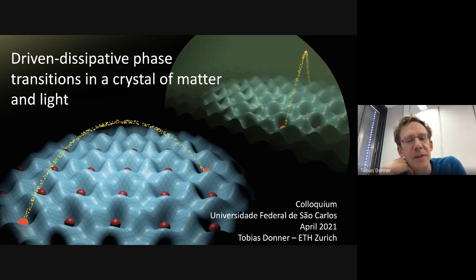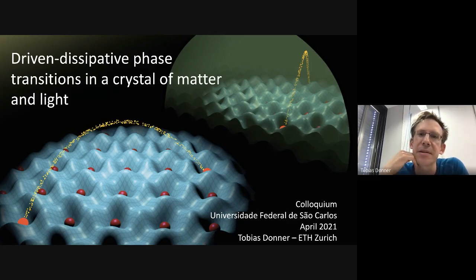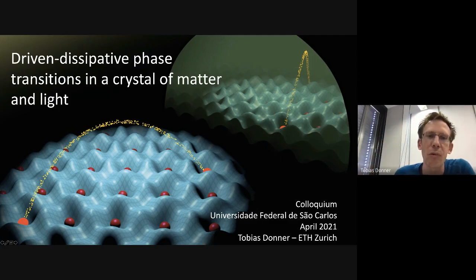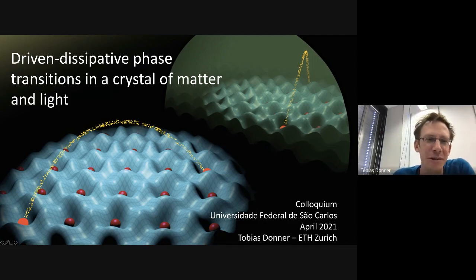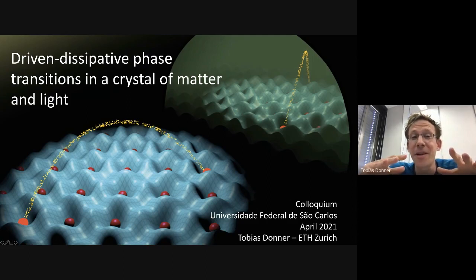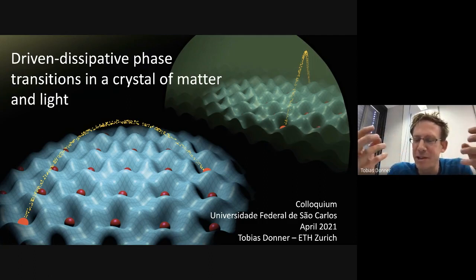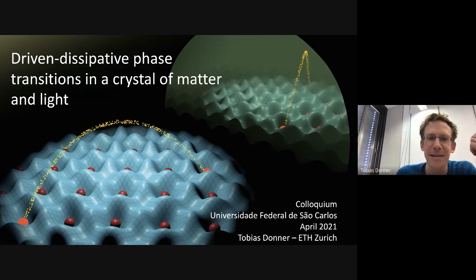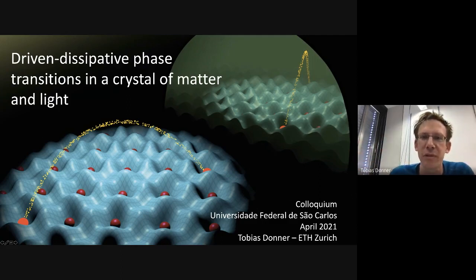I would like to talk about our experiments at ETH Zurich in which we combine a quantum gas or a Bose-Einstein condensate with a high-finesse optical cavity. This combination gives rise to long-range interactions between particles. You see on this first slide our artistic view: atoms as red marbles sitting in a potential that is self-consistently formed due to the interaction between the atoms and the light.